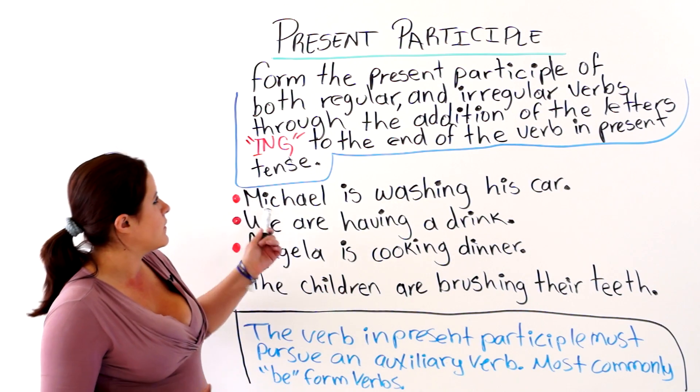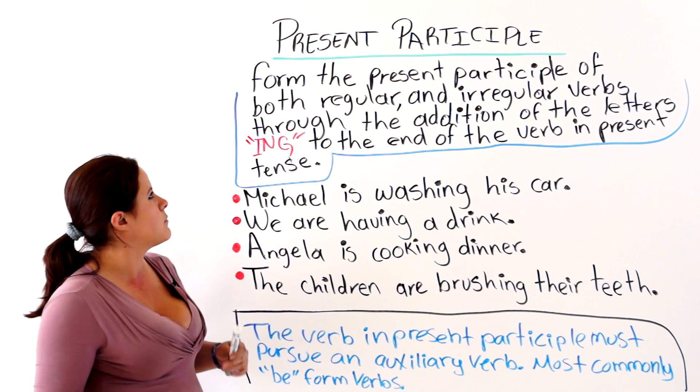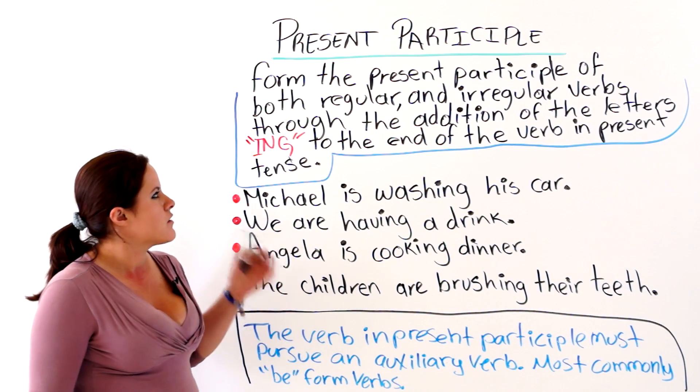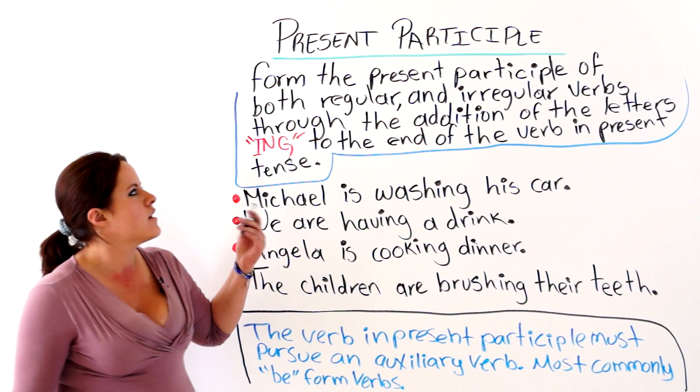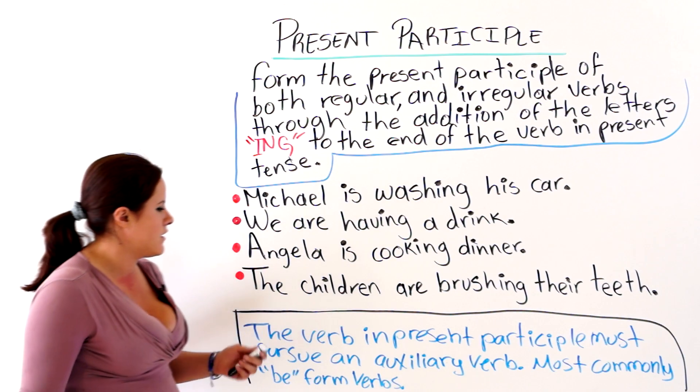As you see, I wrote a note here on the board. It says, Form the present participle of both regular and irregular verbs through the addition of the letters ing to the end of the verb in the present tense.